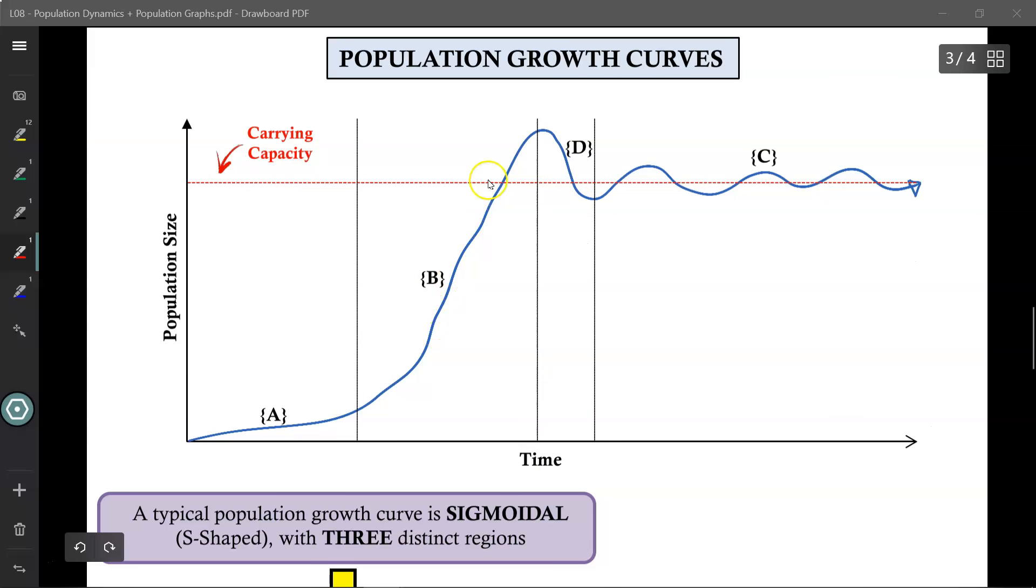A population growth curve typically has a sigmoidal shape. Sigmoidal is just a fancy word for S-shaped, so it kind of has an S-shape. In any case, there are three major distinct regions to a typical growth curve. Don't worry about region D, we'll talk about that in a few moments, but these are the three regions that we are going to be focusing upon for now.